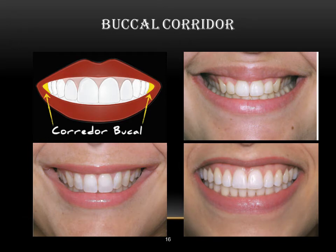Another factor affecting smile design is the buccal corridor. The buccal corridor is the negative space of the teeth — it is the black triangle at the corner of the mouth. In some patients, it gives an indication that teeth are missing. When the buccal corridor is present, we may take into account that it should be covered with our smile design.